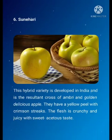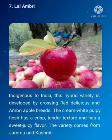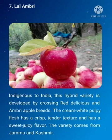Sunhari. This hybrid variety is developed in India and is the resultant cross of Umbri and Golden Delicious apple. They have a yellow peel with crimson streaks. The flesh is crunchy, juicy and with a sweet, acidulous taste. Lal Umbri, indigenous to India, the hybrid variety is developed by crossing the Red Delicious and Umbri apple breeds. The cream, white, pulpy flesh has a crisp, tender texture and a sweet, juicy flavor. The variety comes from Jammu and Kashmir.